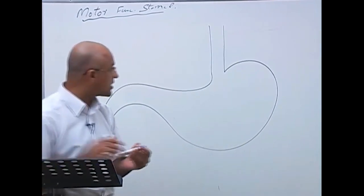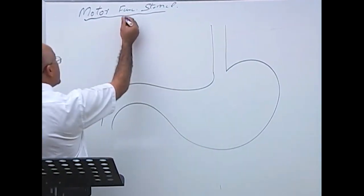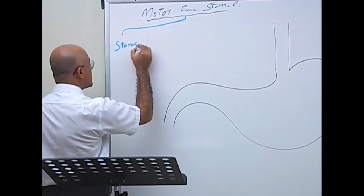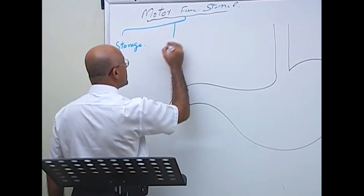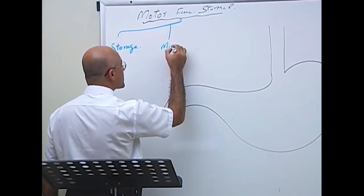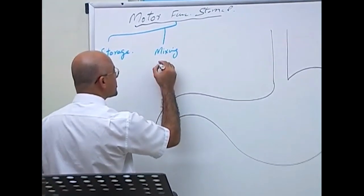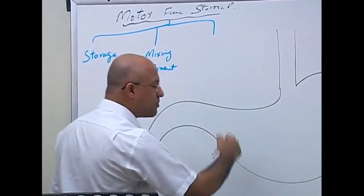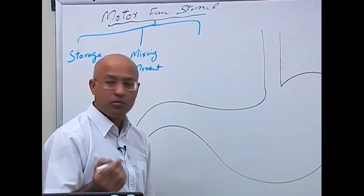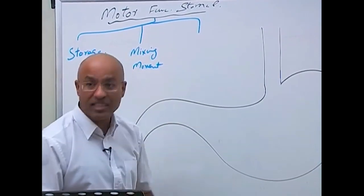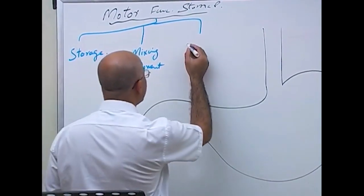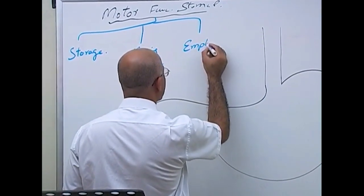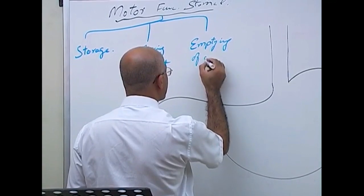What are the three basic motor functions of the stomach? Number one is the storage motor function. Number two is mixing movement. Number three is the propulsive movement, which helps the stomach to empty itself — so we call it emptying of the stomach.